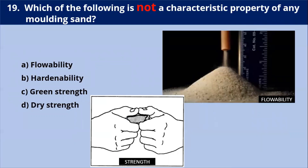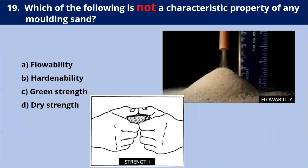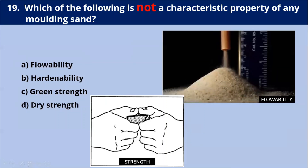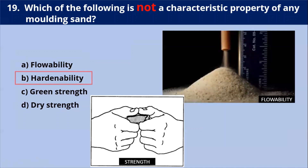Next question: which of the following is not a characteristic property of any molding sand? As shown in this diagram, flowability, green strength or dry strength are all properties of molding sand. However, hardability is not a property of sand. Our answer is B.